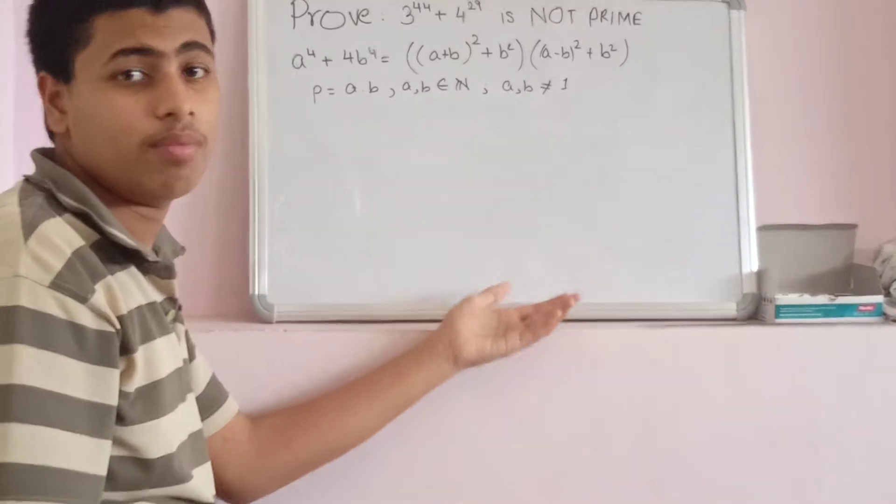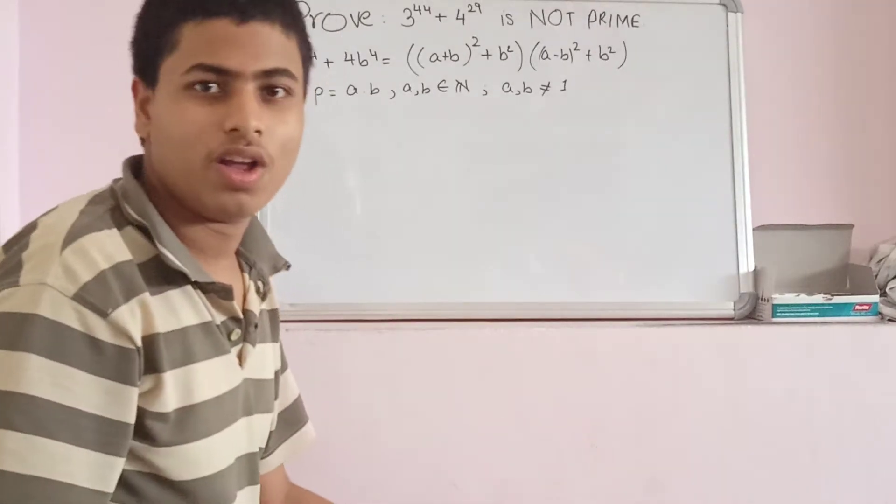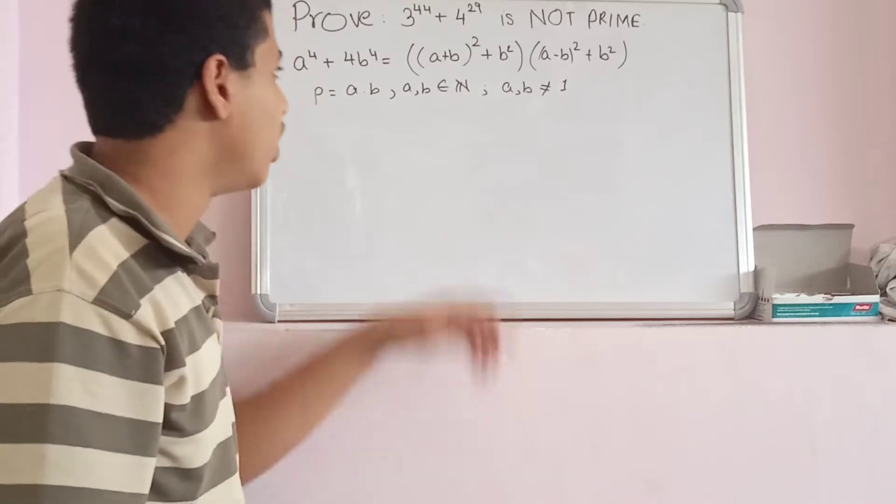For example, 6 is not a prime number because we can write it as 2 times 3, and so on. Great. Let's use that.